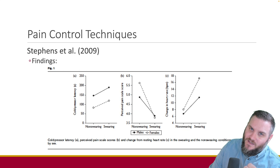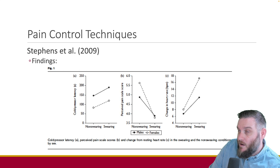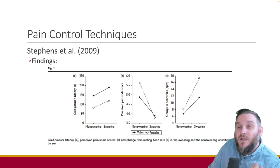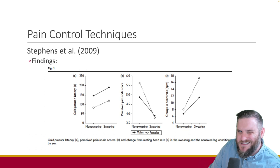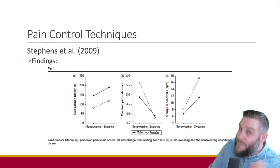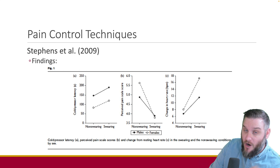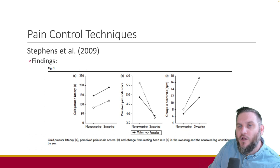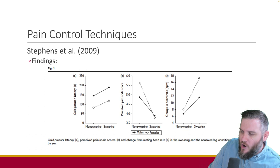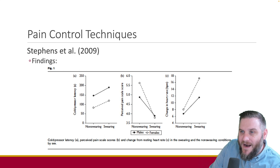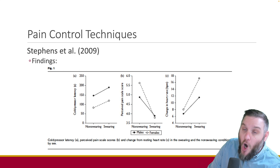Emotions play a specific role in the hypoalgesic effect of swearing as well. Swearing is thought to tap into deep emotional regions of the brain such as the limbic system and the basal ganglia. The study suggests that swearing induces a negative emotion akin to an immediate alarm reaction, possibly aggression. This emotional response, accompanied by an increase in heart rate, aligns with the fight-or-flight response and may contribute to pain tolerance — as faster blood circulation can help counteract the open pain gate.